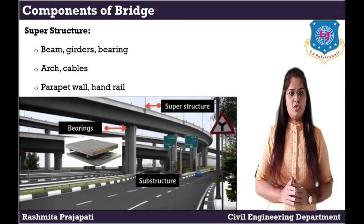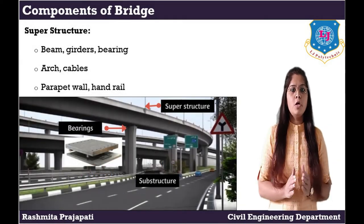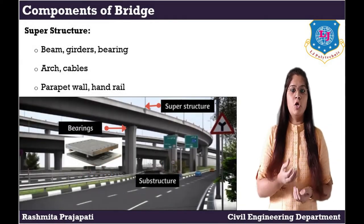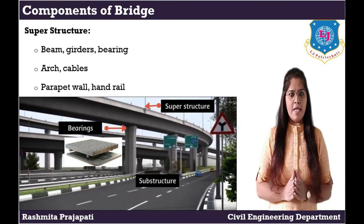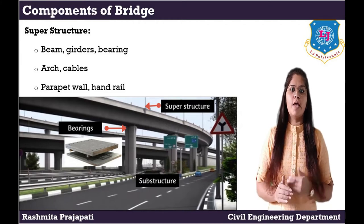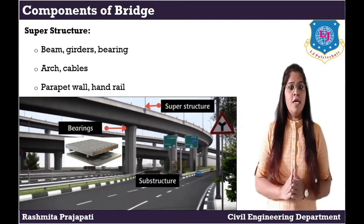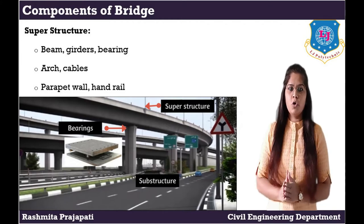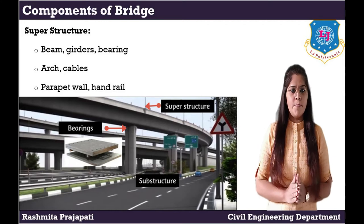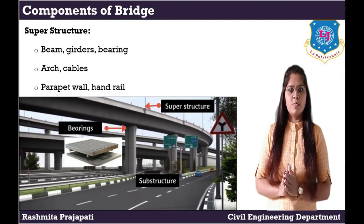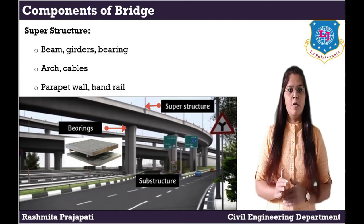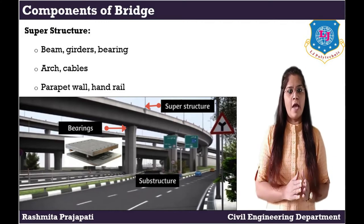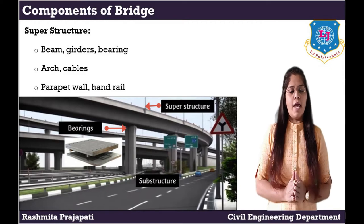Now superstructure. The component of a bridge above the level of the bearing is known as superstructure. It consists of the beam, girders, bearings, arch, cable, parapet wall, handrails and flooring, etc.